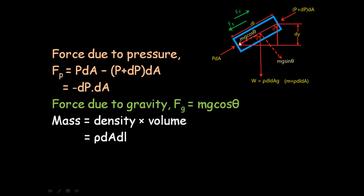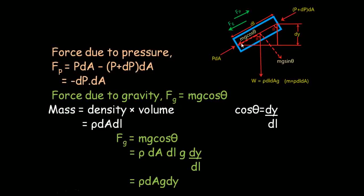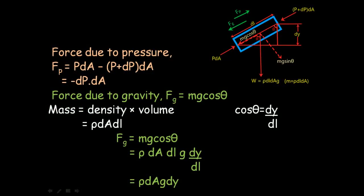We know that mass is density into volume, which is ρ into area times the length, which gives us the volume. If we define cos θ to this triangle, the adjacent side to this angle is dy over the hypotenuse which is dl. Substituting cos θ and mass in the gravity equation, we get force due to gravity as ρ dA g into dy. Another force called the shearing force dFs is exerted by the adjacent fluid particles.